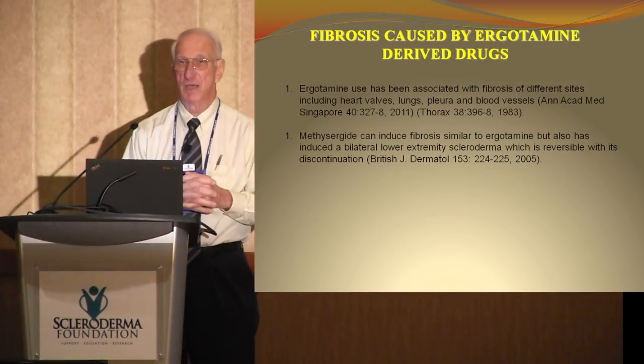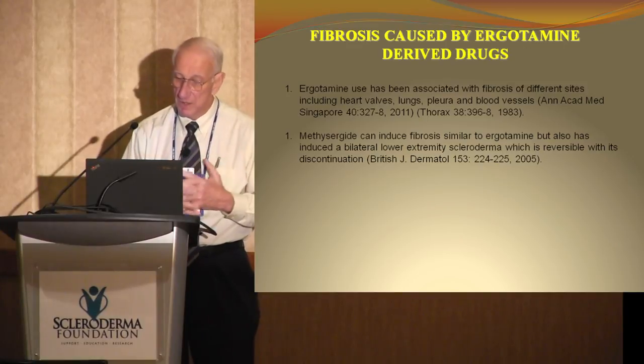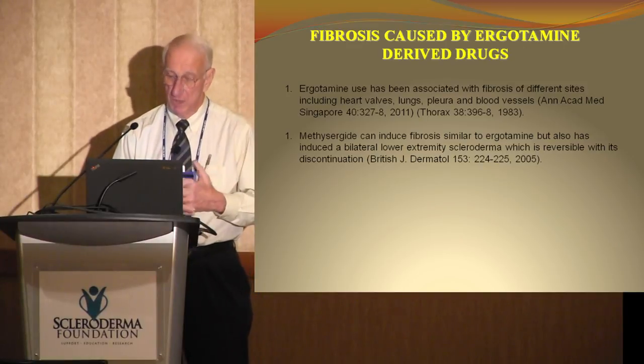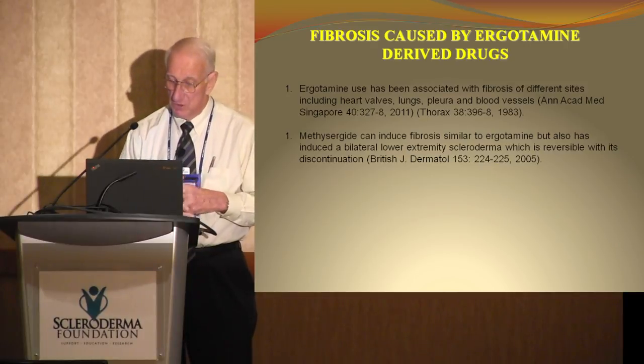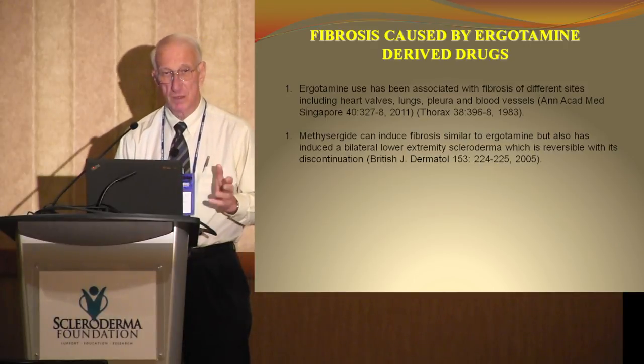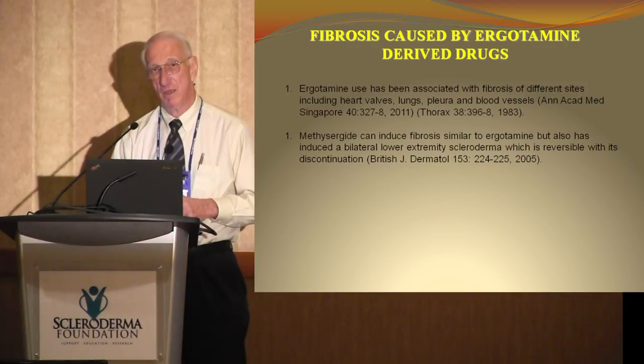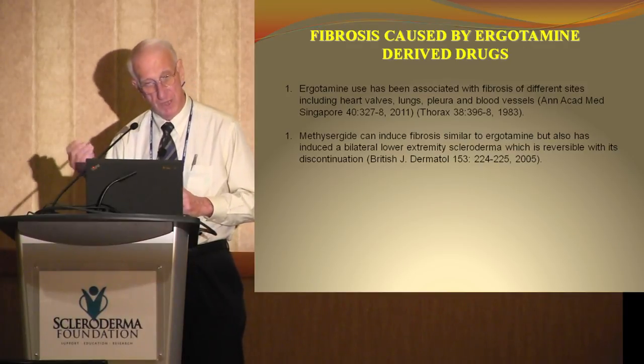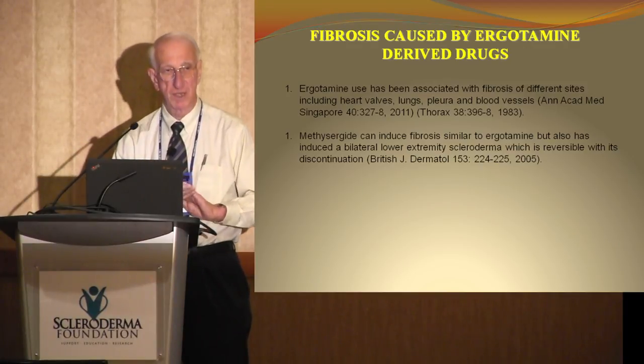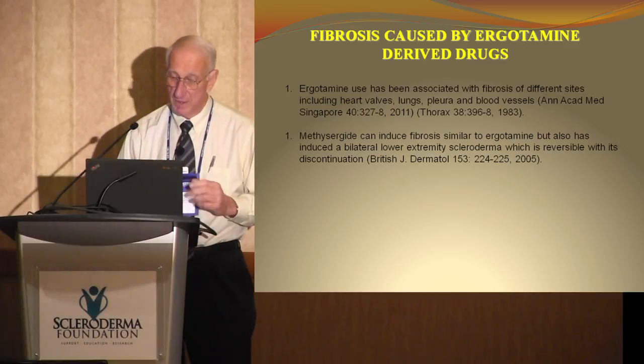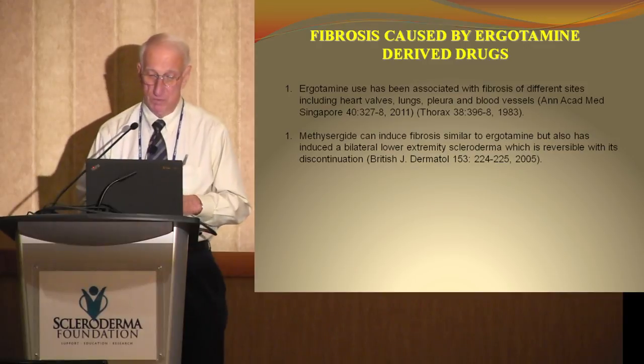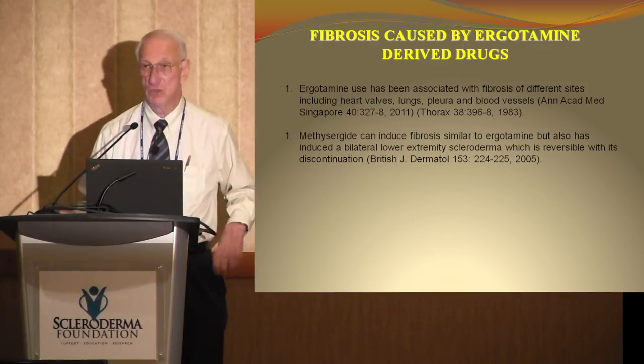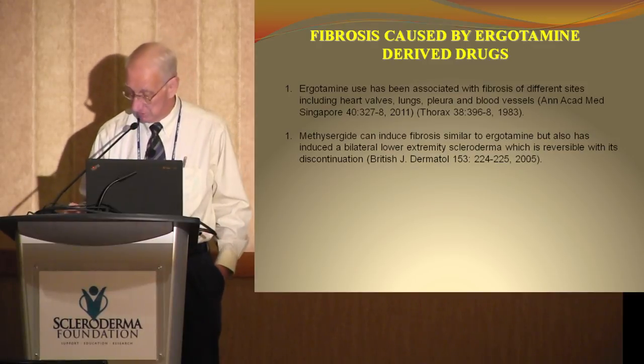The vasoconstriction that occurs triggers the onset of increased collagen production by the fibroblasts. This is probably what's operative also in idiopathic Raynaud's, where you get spasm of the blood vessels in the hands and you start getting thickening of skin there. Again, the decreased oxygen tension due to vasoconstriction is associated with development of fibrosis.